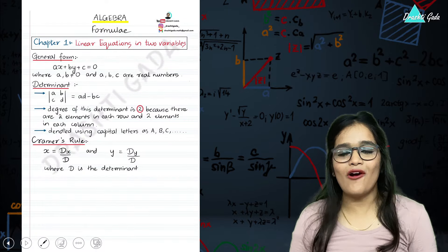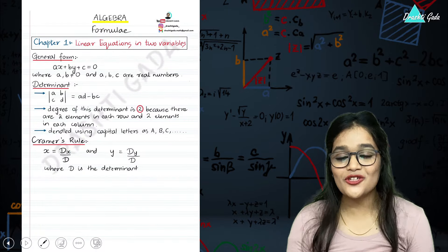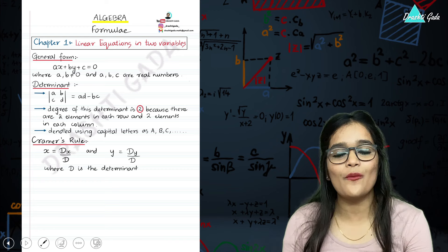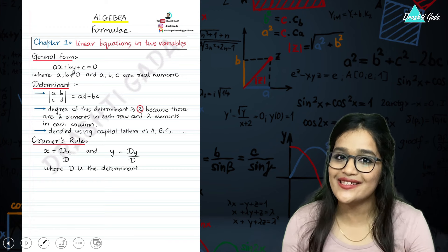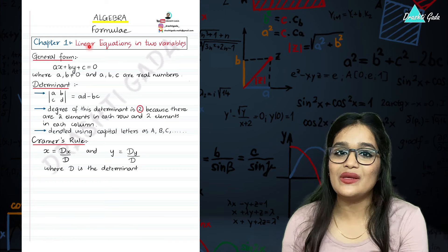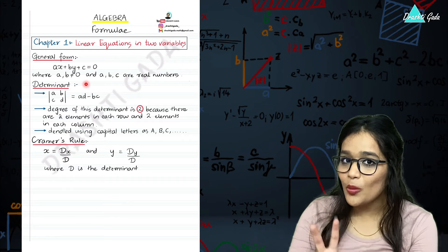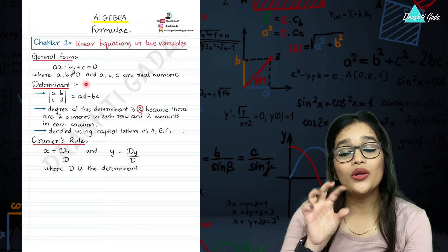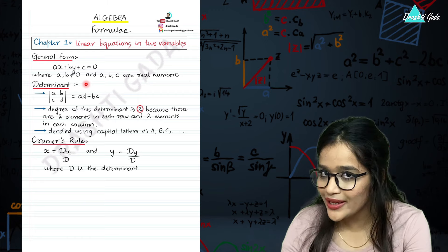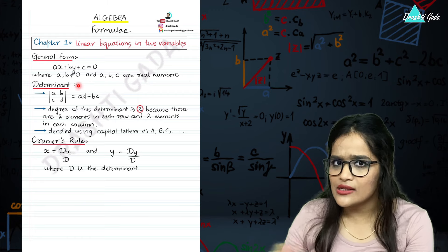Let us start discussing the formulas of the very first chapter, that is linear equations in two variables. The first thing you should know is its standard form: ax plus by plus c is equal to zero. There are two variables here, x and y, and those coefficients have never been zero — therefore a and b are not zero.